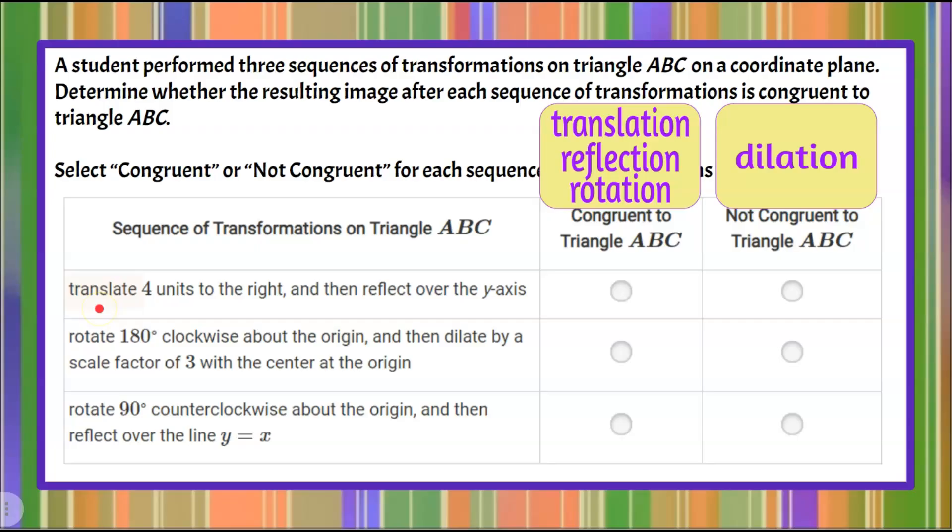So in the first sequence, they translated it and then reflected it. It really is immaterial to know the specific amount of units that it went to the right or where it was reflected over, because we know that if it was a translation, it results a congruent image. And if it was a reflection, it results a congruent image. So therefore, it will be congruent. Nothing was done to change its size.